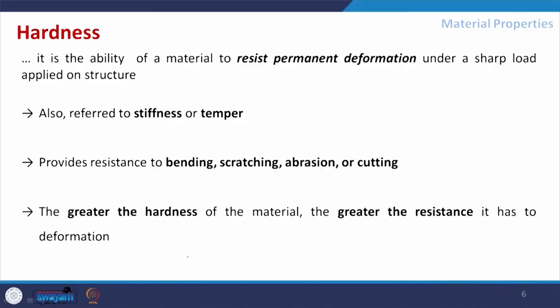The third property is hardness — the ability of a material to resist permanent deformation. For example, this pen is very hard; when I try to apply load it does not bend easily. But if I put more pressure, it will deform. The property resisting that force and preventing deformation is called hardness.